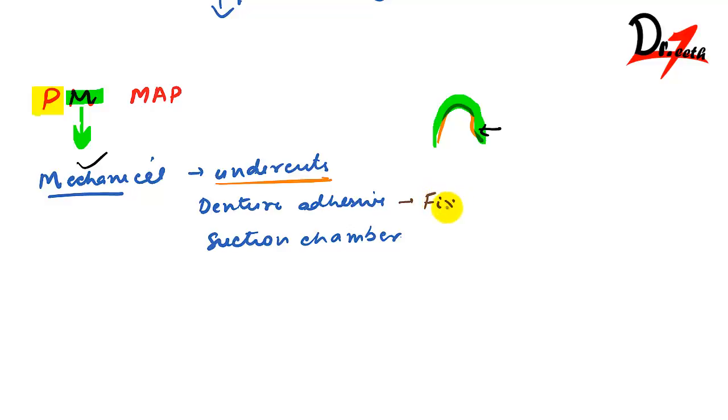Denture adhesive, for example Fix-on, is what we give when we have no other thing left. Especially undergraduate students give the patient Fix-on and tata bye bye. Then we have suction chambers, which are devices that help in suction.